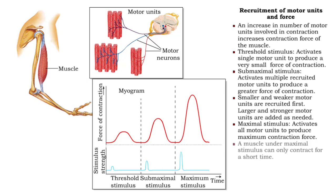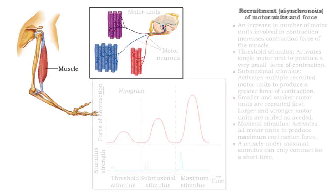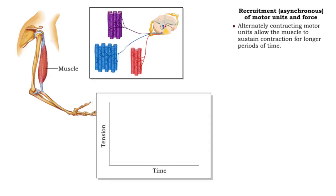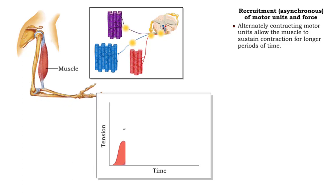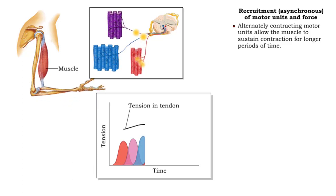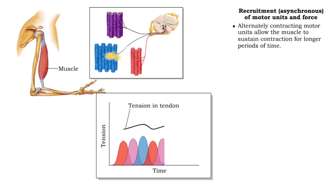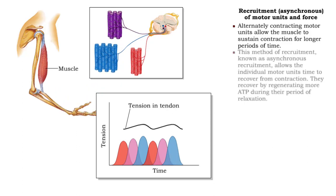A muscle under maximal stimulus can only contract for a short time. Alternately contracting motor units relieve one another and enable sustained contraction. This method of recruitment, known as asynchronous recruitment, allows individual motor units time to recover from contraction by regenerating more ATP during their period of relaxation.